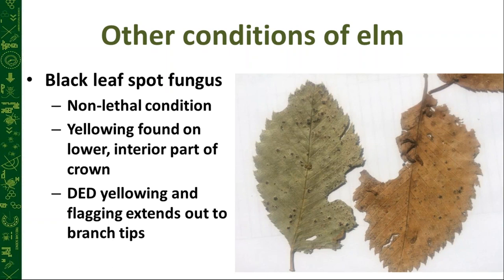The name 'black leaf spot' is aptly named — you can see black spots on the leaves, which yellow and drop with those spots. Contrast this with Dutch elm disease: DED yellowing and flagging goes out to branch tips, while black leaf spot stays in the lower shaded interior parts of the crown.